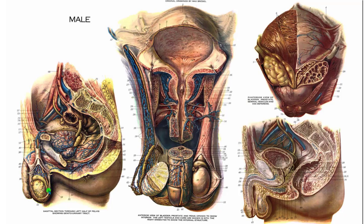The scrotum is the outcropping of skin that houses the testes inside. So if I were pointing at this outcropping of skin and out-pocket of skin, that would be the scrotum. A testis is the singular version that ends in -is, made plural by referring to the testes.